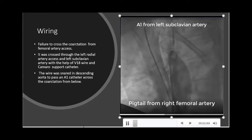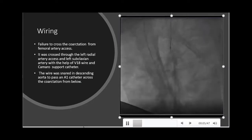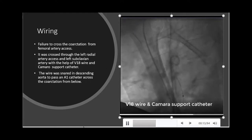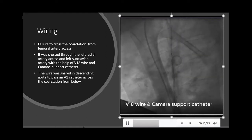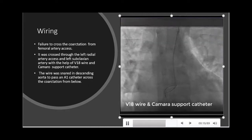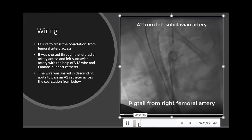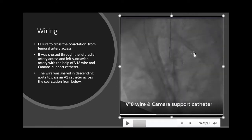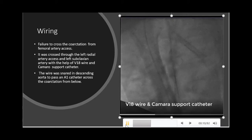We failed to cross the coarctation from the femoral artery axis. The coarctation was then crossed through the left radial artery axis and left subclavian artery with the help of a V18 wire and coronary support catheter. The wire was snared in the descending aorta to pass a catheter across the coarctation from below. In the video, you can see the catheter from the left subclavian artery, with the V18 wire and support catheter from the left radial artery axis, which successfully crossed the coarctation.